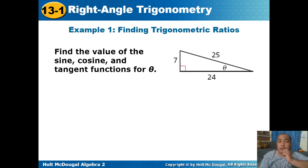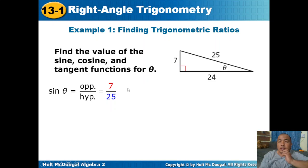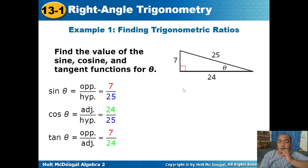Sample 1 — finding trigonometric ratios. Find the value of the sine, cosine, and tangent functions for theta. We have a right triangle with sides 7, 24, and 25, and theta is our reference angle. Sine theta equals opposite over hypotenuse: 7 over 25. Cosine theta equals adjacent over hypotenuse: 24 over 25. Tangent theta equals opposite over adjacent: 7 over 24.